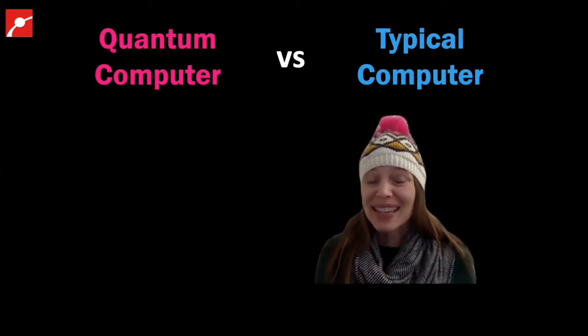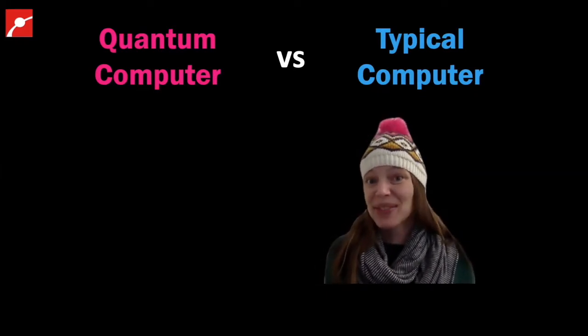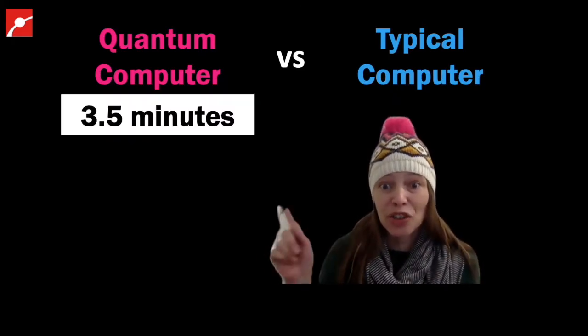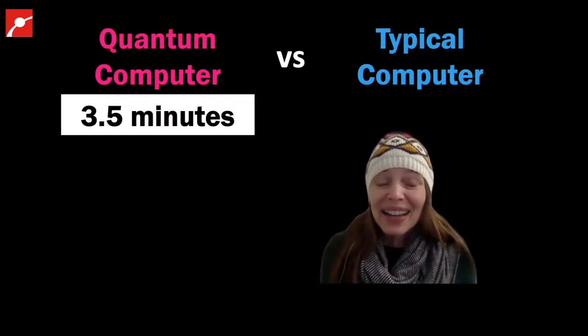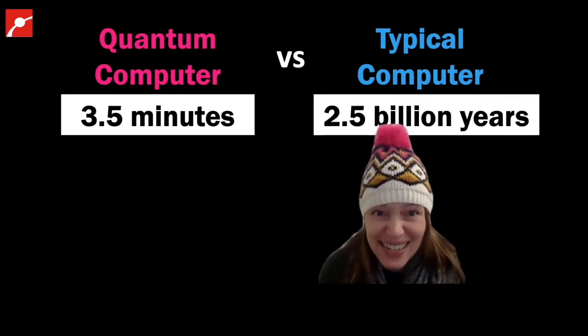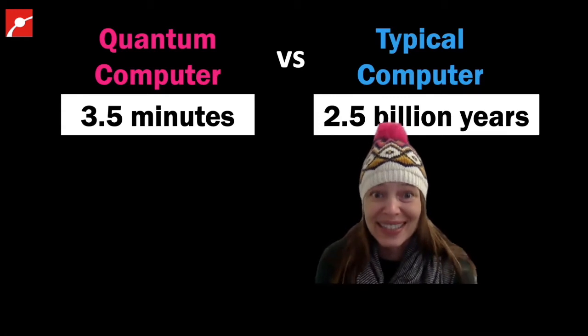In fact, last year Google announced that they had built a quantum computer that was way faster than even the most powerful supercomputer that exists today. But just recently, scientists in China announced that they have one that's even faster. They say it could complete a calculation in just three and a half minutes that it would take two and a half billion years to solve on our existing computers.